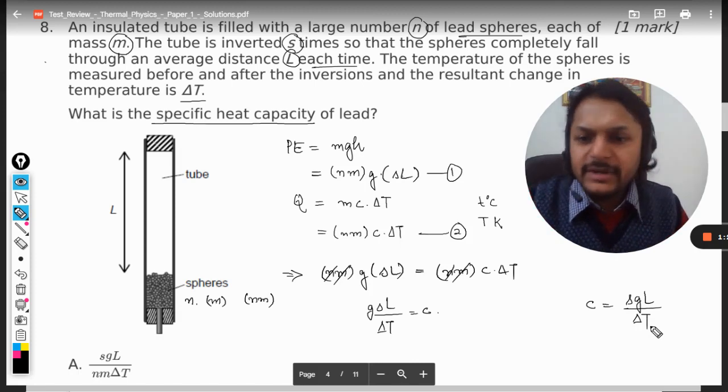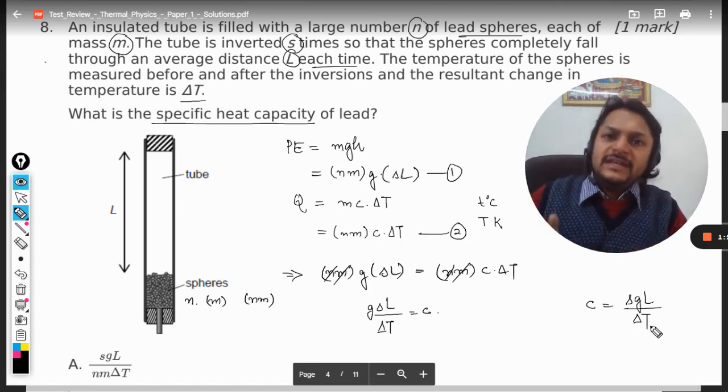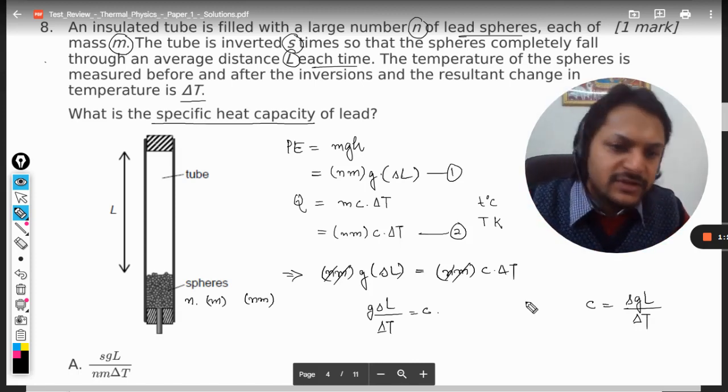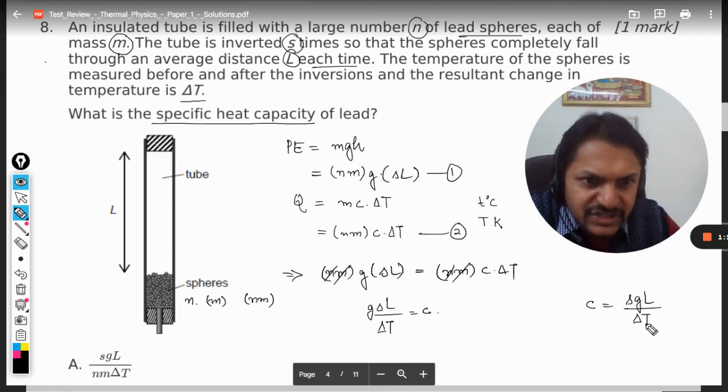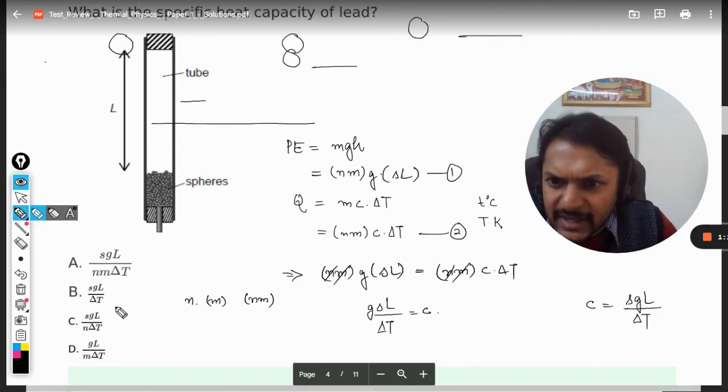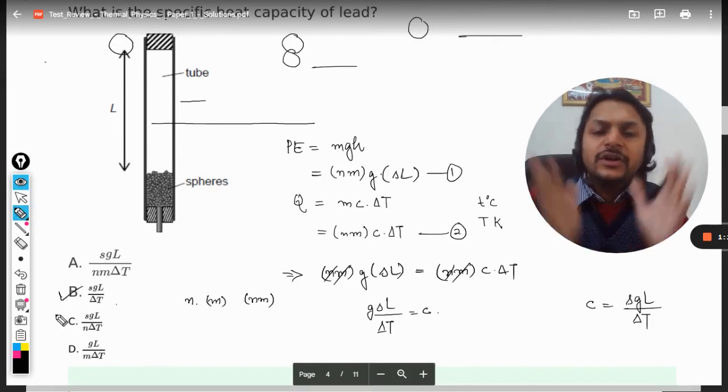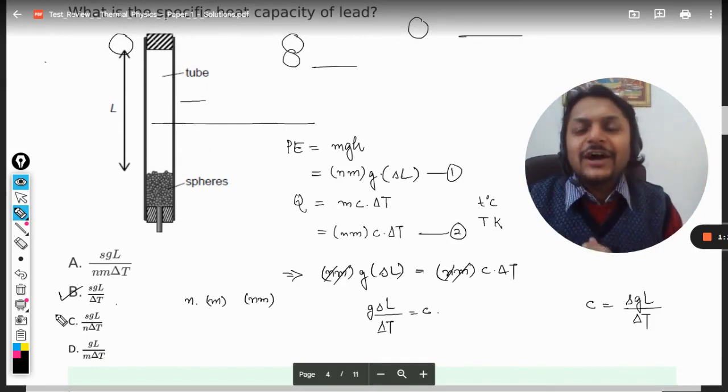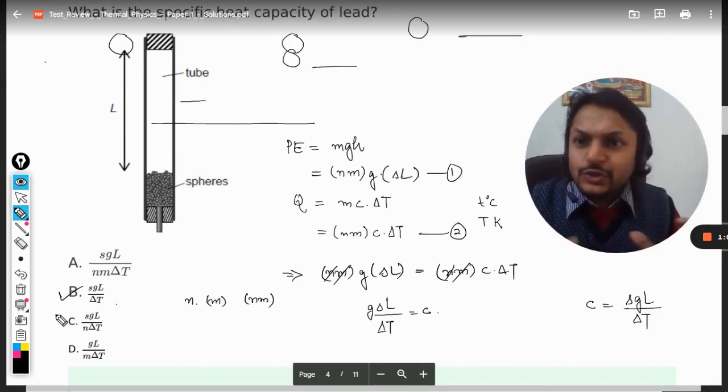s gl divided by delta t. So now we have to see the options and we will see which option is correct. s gl divided by delta t - I'm going to move this thing a little bit - s gl by delta t, yes, B is the correct answer for this question.